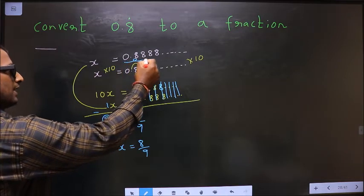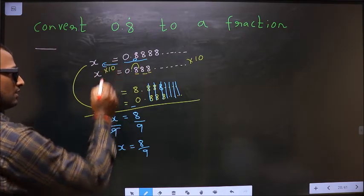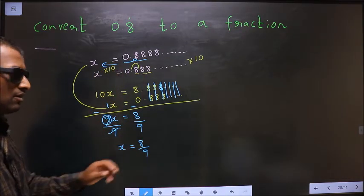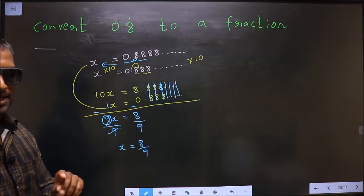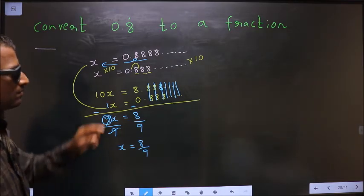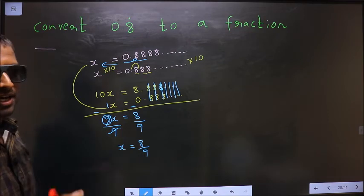Earlier we have taken this for x. Now I got x equal to 8 by 9. That implies only one thing, that is these two are equal.